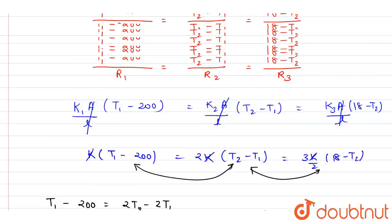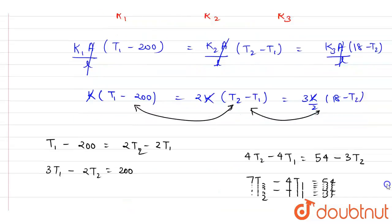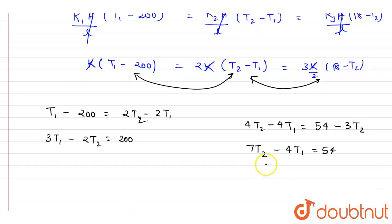Now if you see we want this T1, right? So you can just eliminate this T2. If you see here you can just multiply this equation with 7 and this equation with 2 and add them. So if I multiply this equation with 7, it is 21T1 minus 14T2.